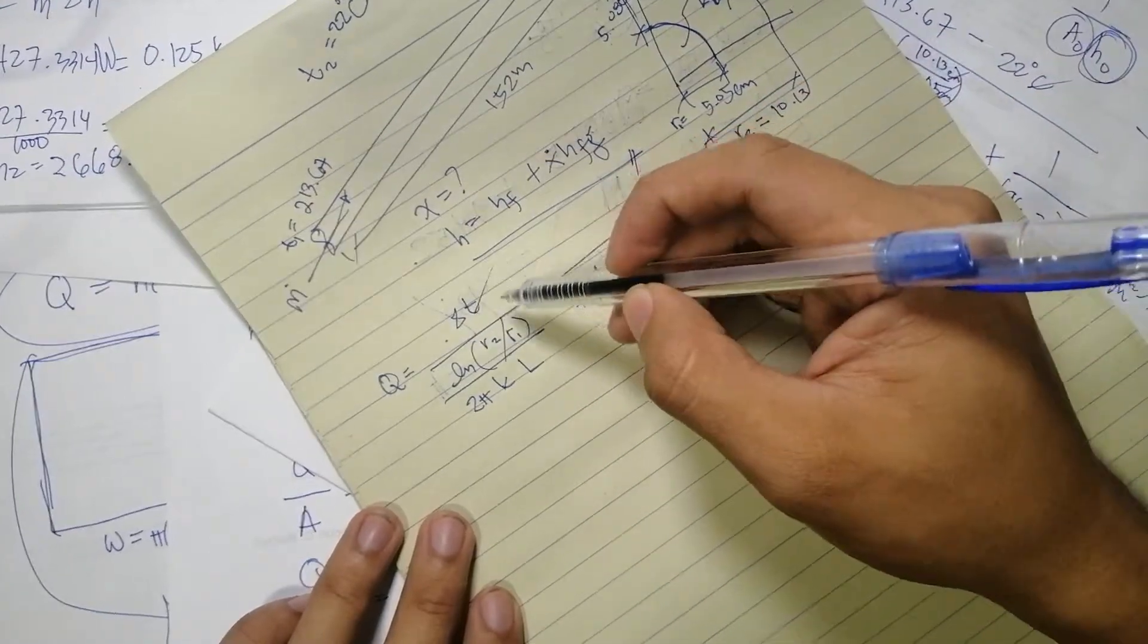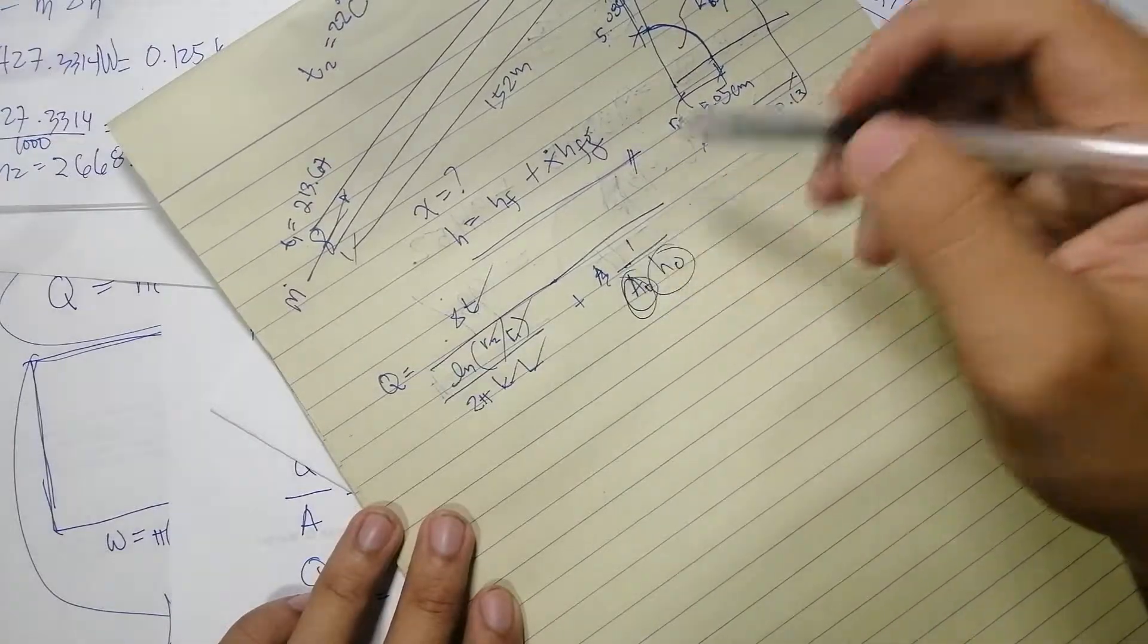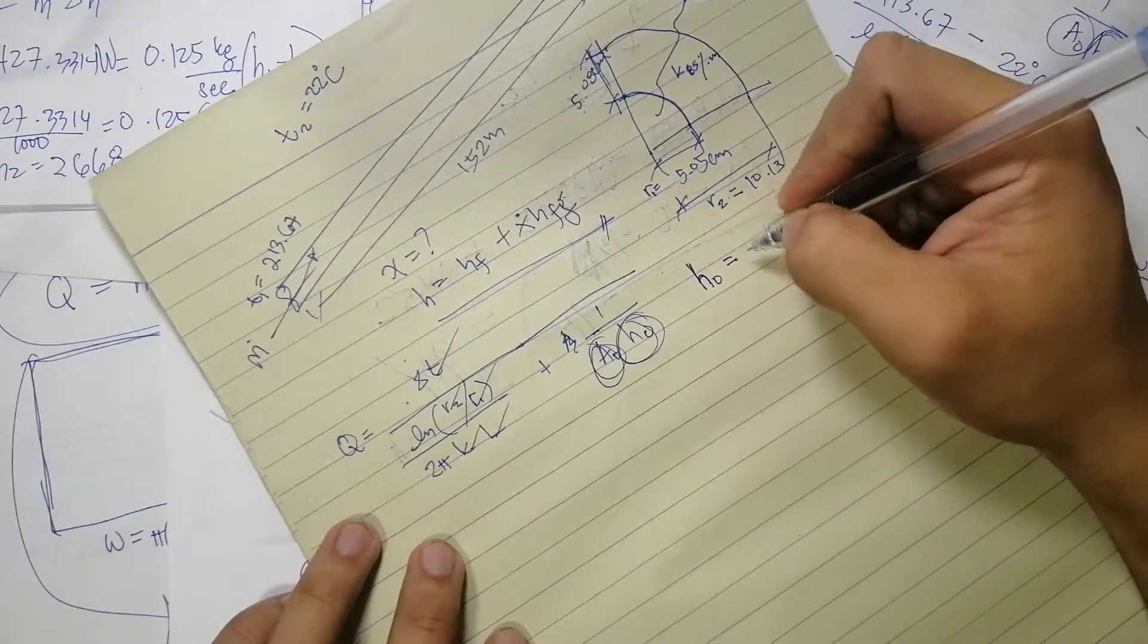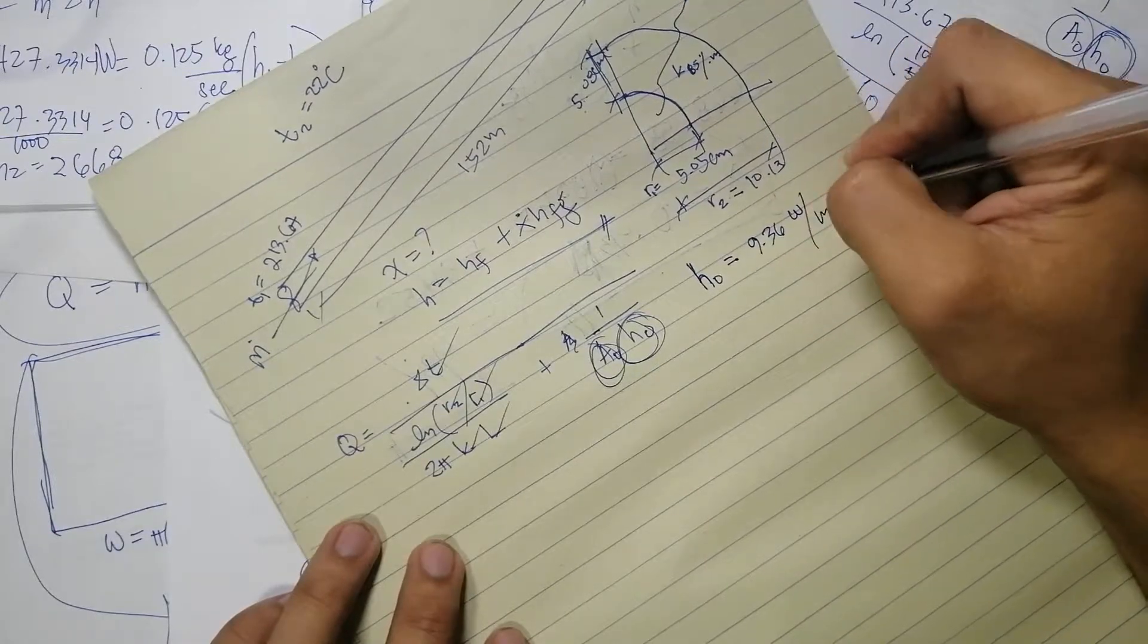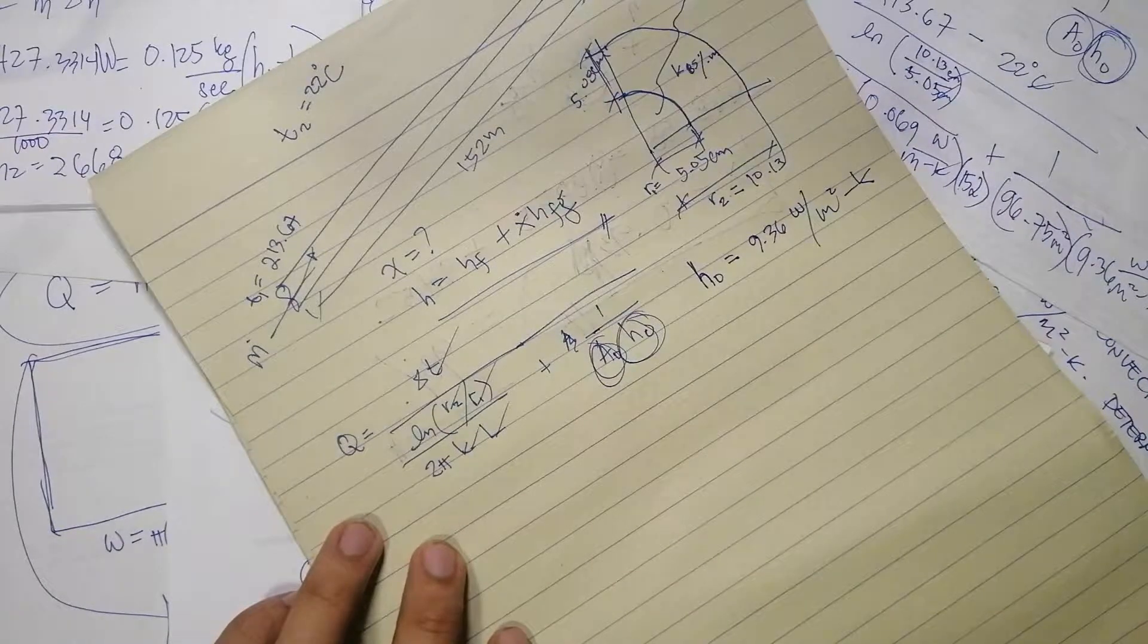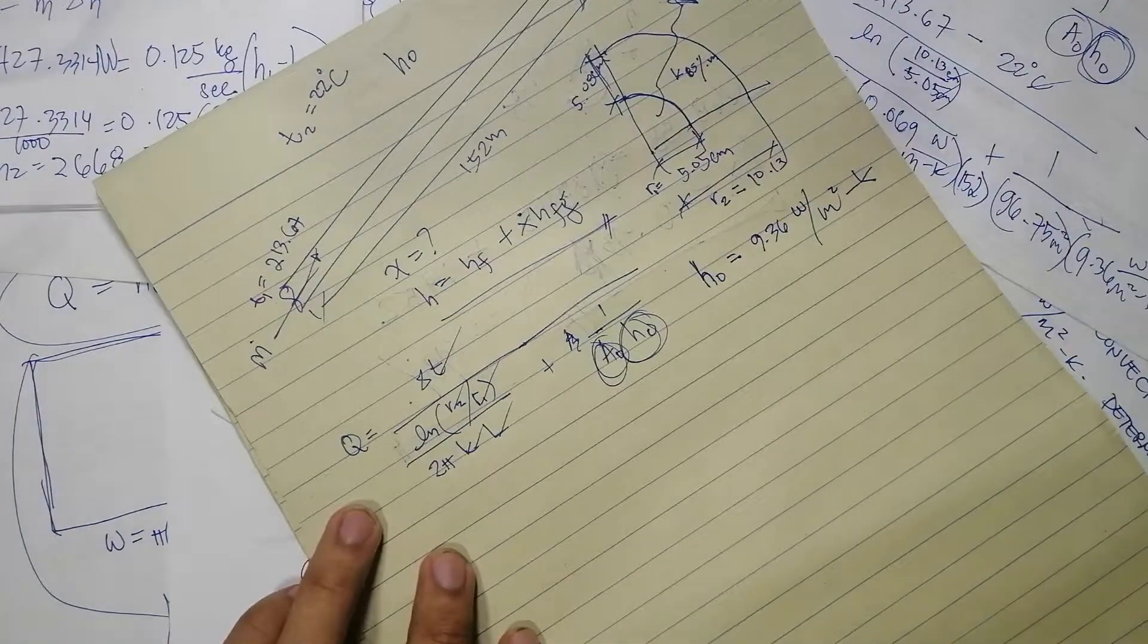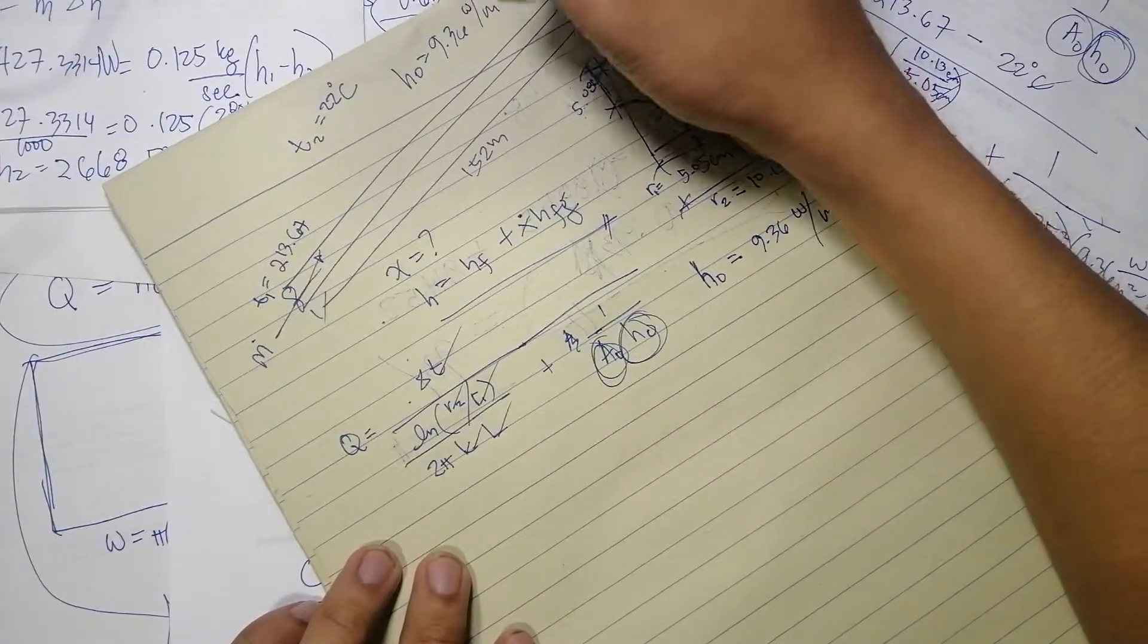So let's start. We have this, but without a value for this. Well, HO for still air, you can google it, it is equivalent to 9.36 watt per meter squared kelvin. This is the value of the convective film coefficient for air, still air.